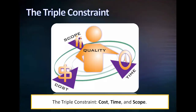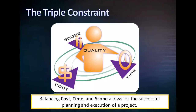In another scenario, if a client requests to shorten the duration of a project, you would need more resources to execute the same scope. Therefore, there is a balancing of these three elements that, only when fully understood by the project manager, allows for the successful planning and execution of a project.